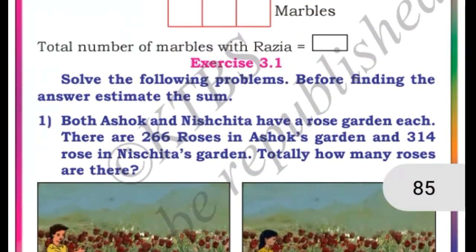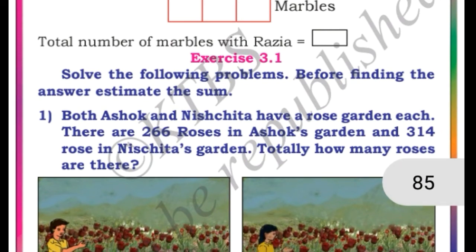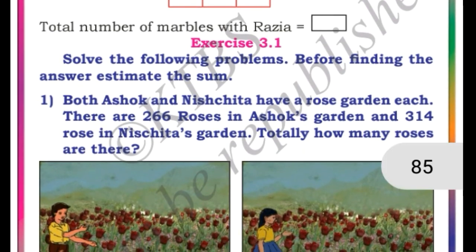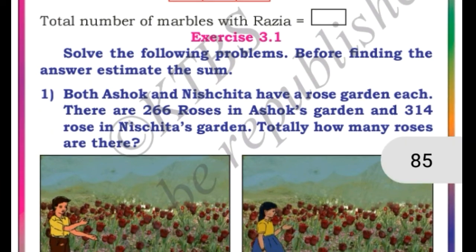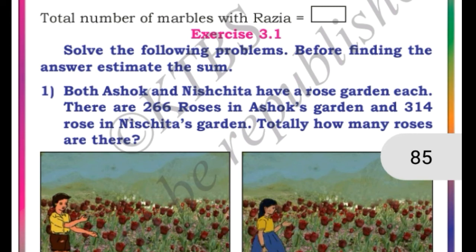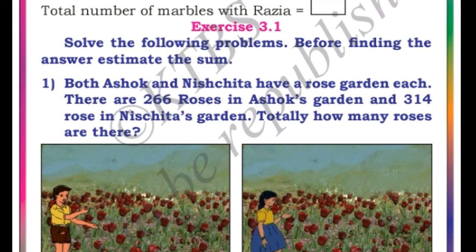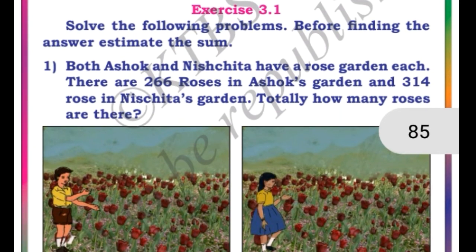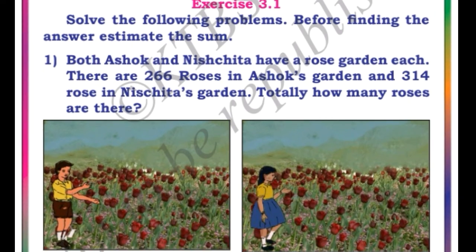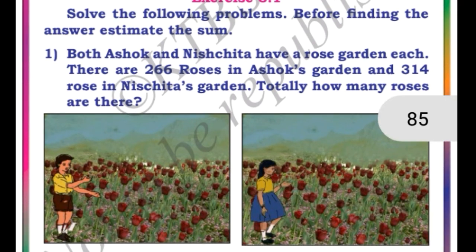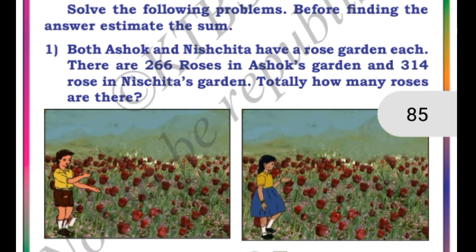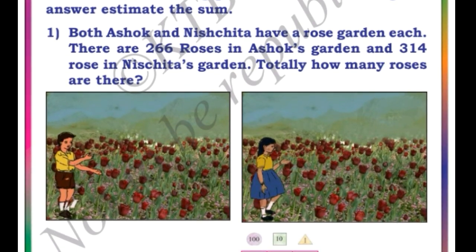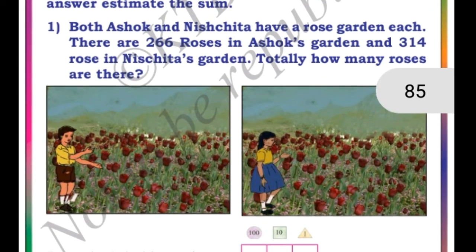Exercise 3.1: solve the following problems. Both Ashok and Nishita have a rose garden each. There are 266 roses in Ashok's garden and 314 roses in Nishita's garden. To find the total roses, we add. Units place: 6 plus 4 is 10 — write 0 and carry 1. Tens place: 6 plus 1 is 7, plus 1 carry is 8. Hundreds: 3 plus 2 is 5. The answer is 580. Total number of roses is 580.